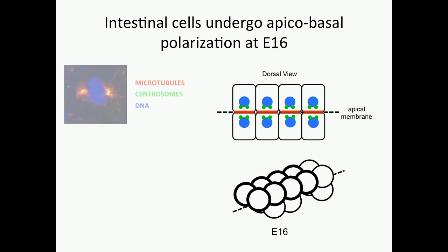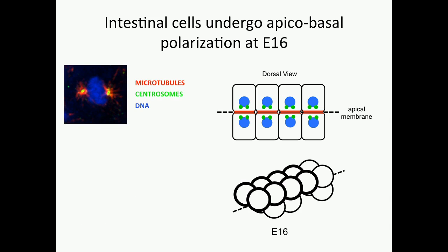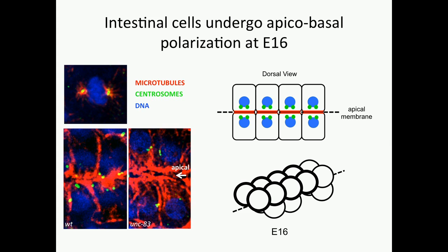If we look at the microtubules in this system, you see in the early intestine, while it's dividing, microtubules organize around the centrosomes. But after polarization, we see the microtubules nucleated and stabilized at the apical membrane. You can see this especially well in this image depicting a mutant in which the nuclei don't polarize completely to the apical membrane, so we can see that space filled by microtubules.